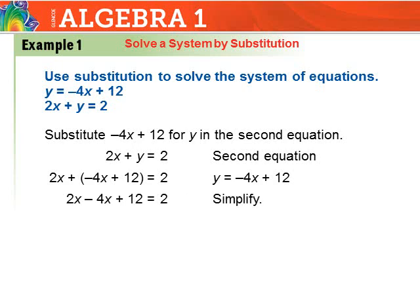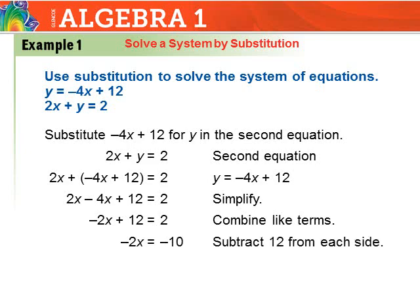So it's 2x minus 4x — because positive times negative is negative — plus 12 equals 2. Collecting like terms: 2x minus 4x gives negative 2x, so negative 2x plus 12 equals 2. Subtracting 12 from each side gives negative 2x equals negative 10. Dividing both sides by negative 2 gives x equals 5.